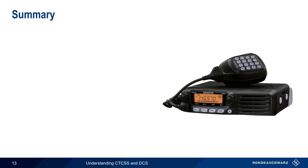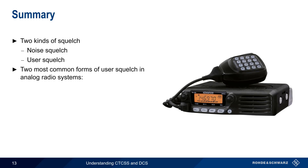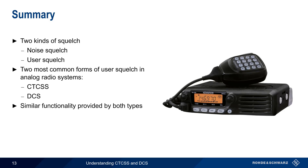Let's summarize what we've learned. Generally speaking, there are two kinds of squelch: noise squelch, which suppresses audio output when the received RF level falls below a configured threshold, and user squelch, which suppresses audio output unless a defined tone or code is received, allowing receivers to only hear transmissions from certain users. The two most common forms of user squelch in analog radio systems are CTCSS and DCS. CTCSS sends a subaudible analog tone at a certain frequency, whereas DCS sends an FSK-modulated digital code. Both CTCSS and DCS provide similar functionality, including the creation of user groups as well as repeater access. This concludes our presentation on Understanding CTCSS and DCS. Thanks for watching.